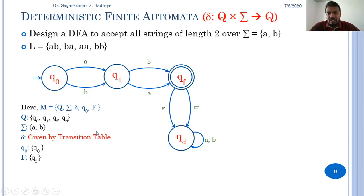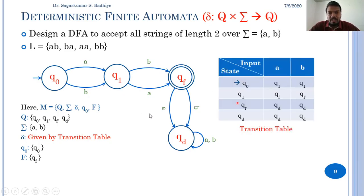The transition δ can be represented by the transition table. In state q0, if I get a I go to q1, if I get b I go to q1. In q1, if I get a I go to qf, if I get b I go to qf.